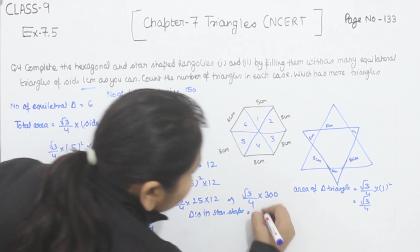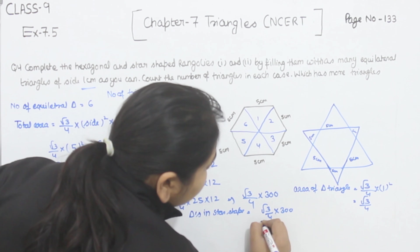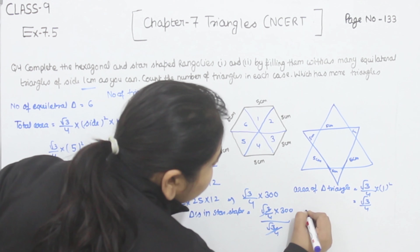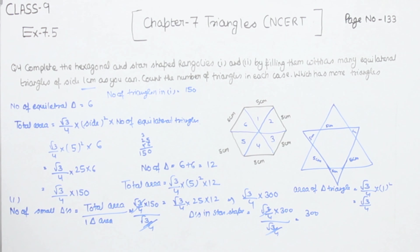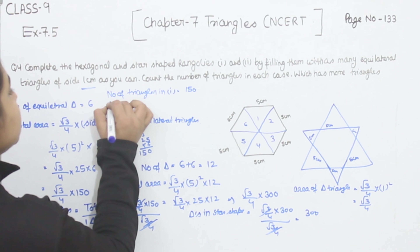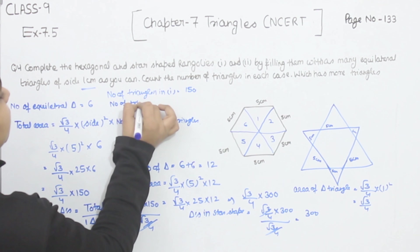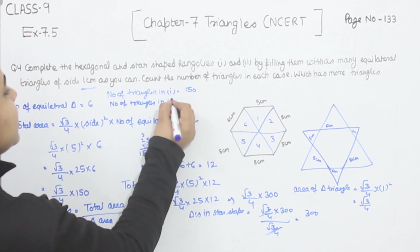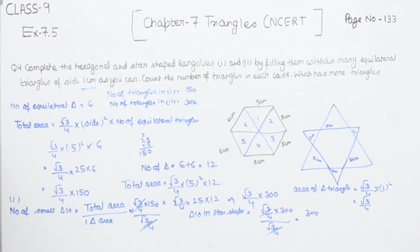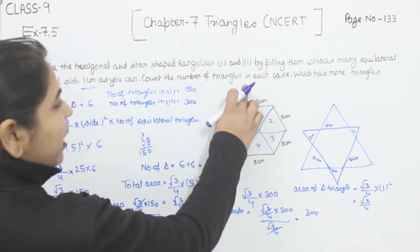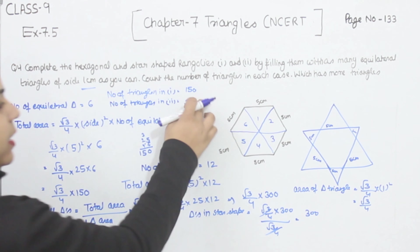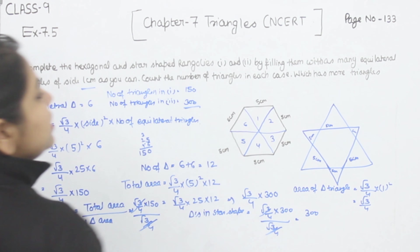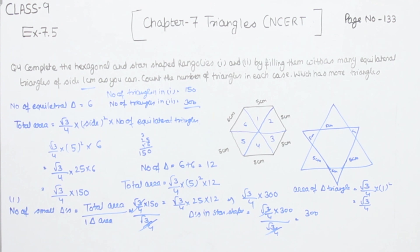For the star shape: the area is root 3 by 4 × 300, divided by the area of one triangle which is root 3 by 4. So we are having 300 equilateral triangles. Number of triangles in the second one is 300. Comparing both, the star shape has more triangles.